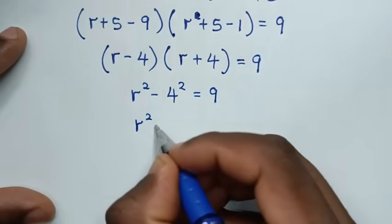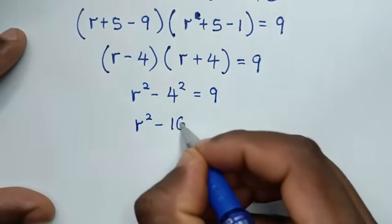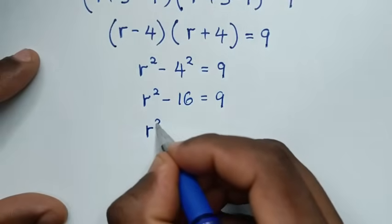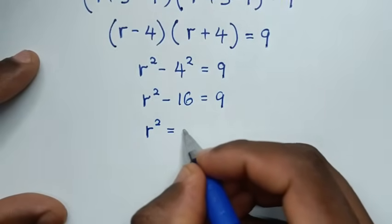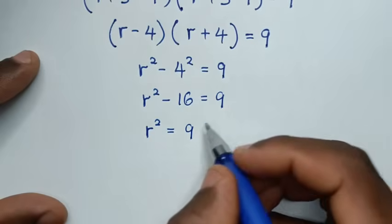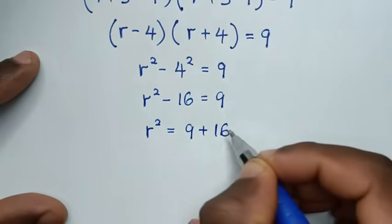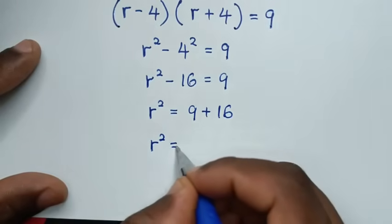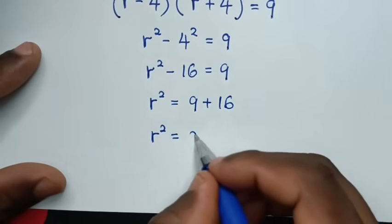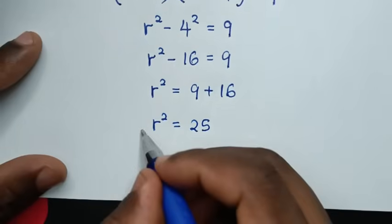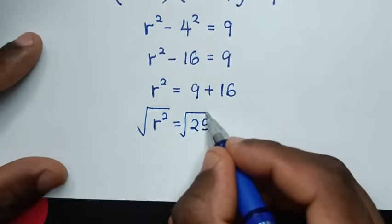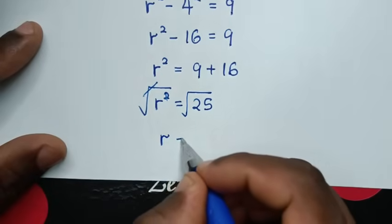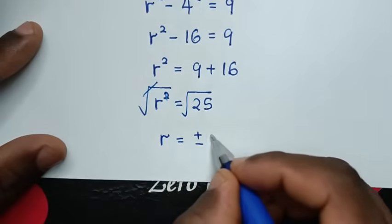So r²−16 = 9, which gives r² = 9+16 = 25. Applying square root on both sides, r = ±5.